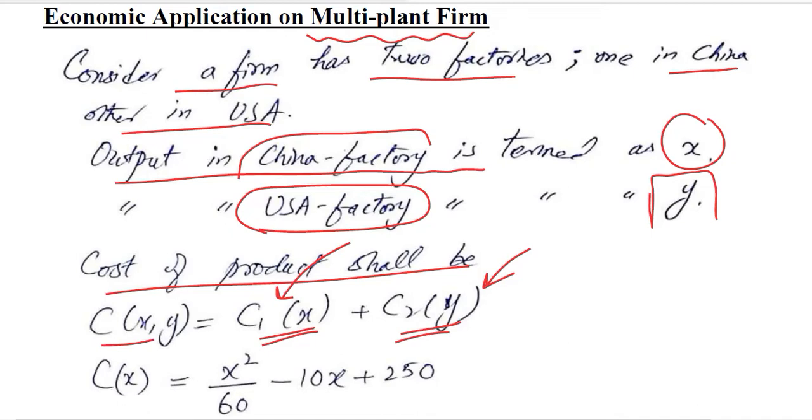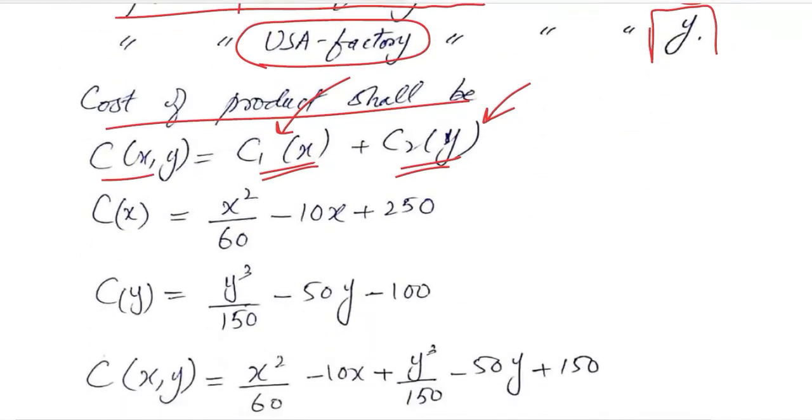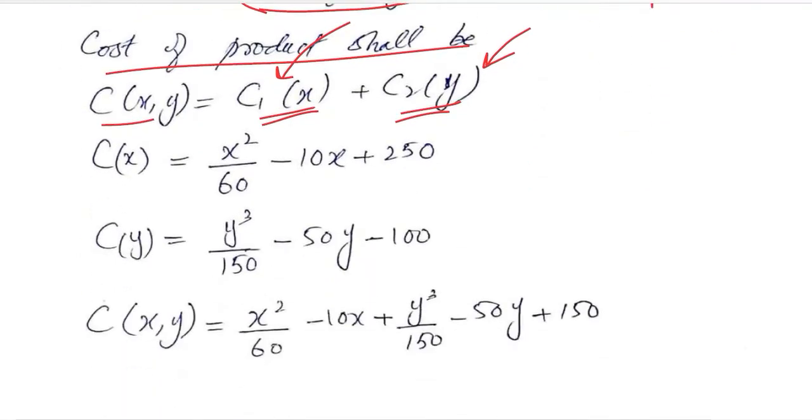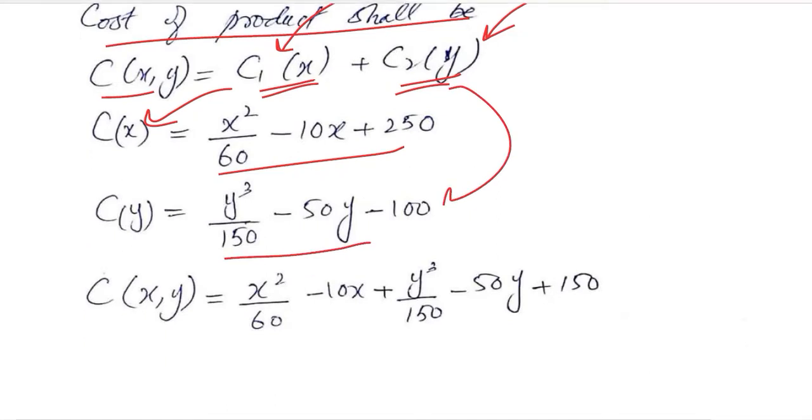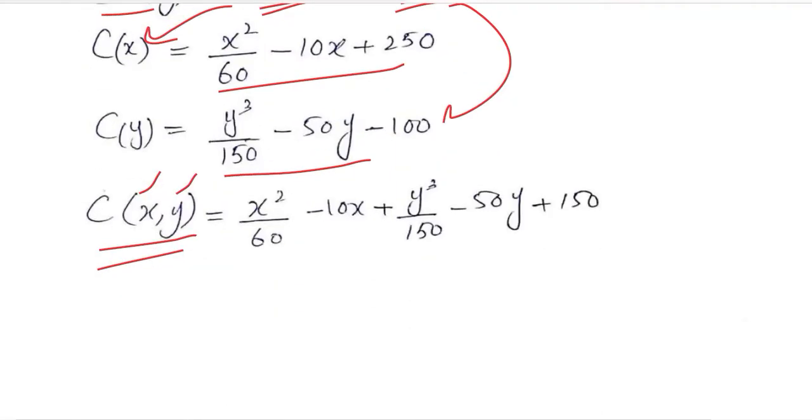We add both of these components of the costs, and we have the certain cost equations C1 and C2. We add them now because we want the overall cost incurred due to X production and Y production. Here we have added the two components, and we get the total cost.